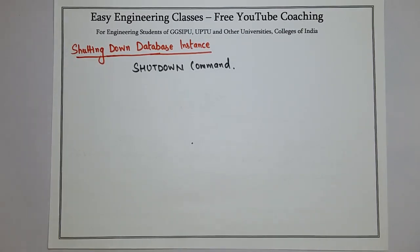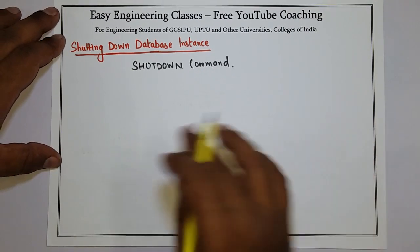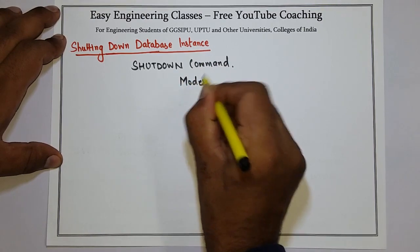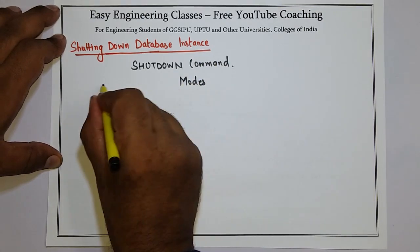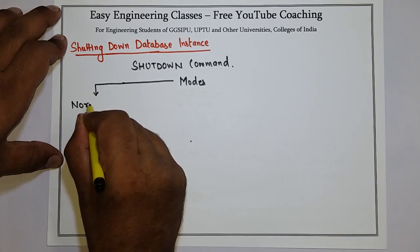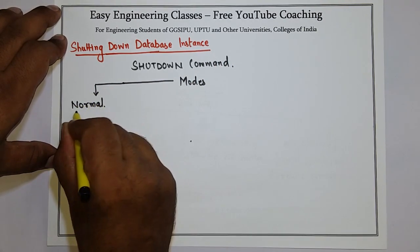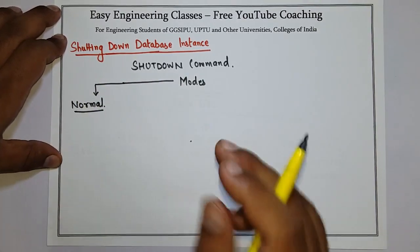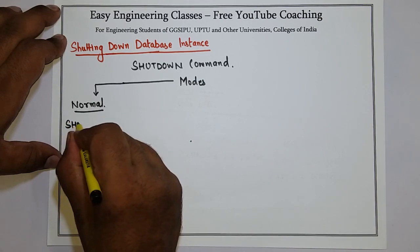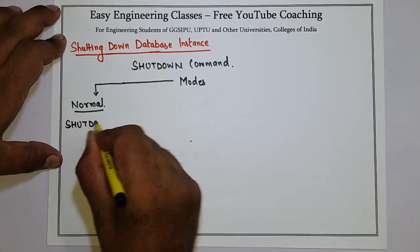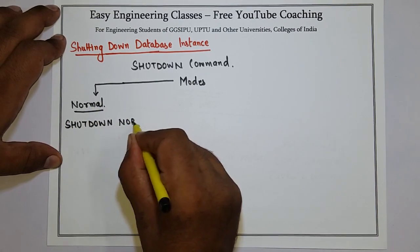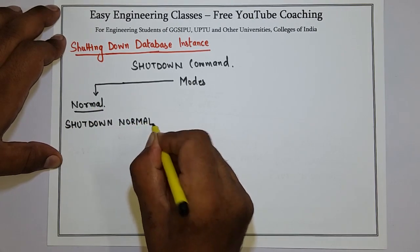There are different modes of shutting down a database. We will discuss each mode now. The first mode is normal. In normal shutdown mode, we write the command shutdown and pass the parameter normal.